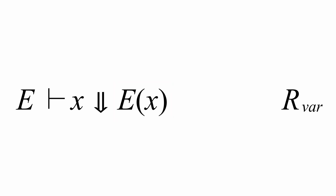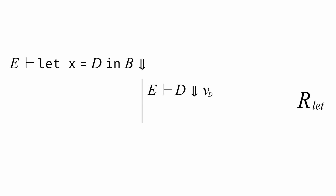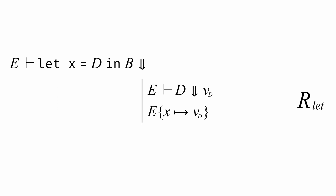With the ability to look up variables in environments, let's take a look at let expressions, where we let a variable equal some definition expression in some body expression. If we take the definition and evaluate it in the same environment e, we'll get some value vd. In the substitution semantics, our next step was to substitute occurrences of the variable for the value vd. But now, in the environment semantics, we'll instead take the existing environment e and augment it so that the variable x maps to the value vd, and evaluate the body in this new augmented environment. The body will then evaluate to some value vb, and that's the value of the let expression as a whole.